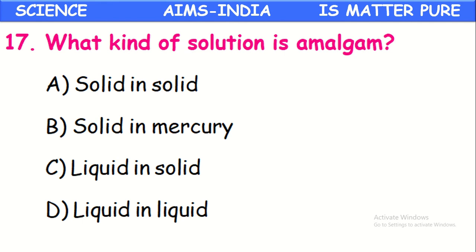What kind of solution is amalgam? Amalgams are homogeneous solutions of one or more metals with mercury. Generally metals are solids, so it is solid in mercury. The mixture of metals with mercury is called amalgam — one component is mercury, the other components are any other metal. We can say amalgam is a mixture of solid in mercury.